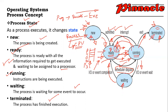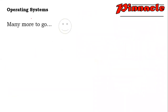These five process states — new, ready, running, waiting, and terminated — are also called the five-state process model in operating systems. There are many more topics to go in operating systems, and we will be discussing those topics in our future lectures. Till then, thank you.